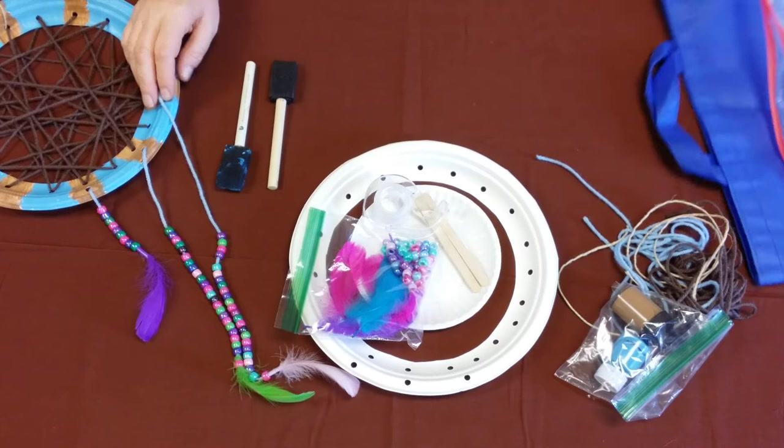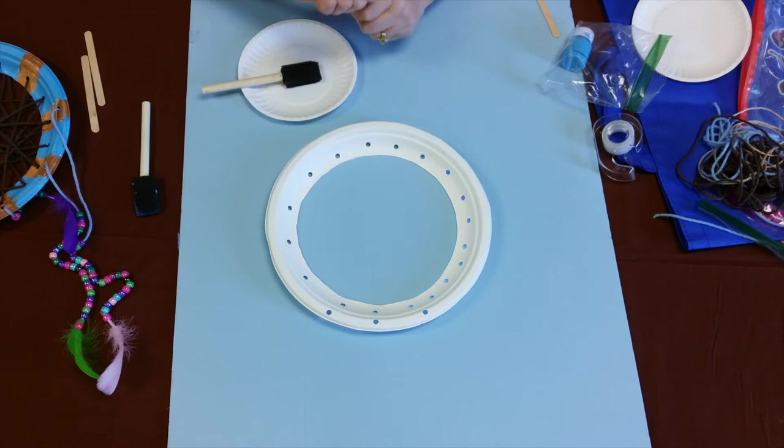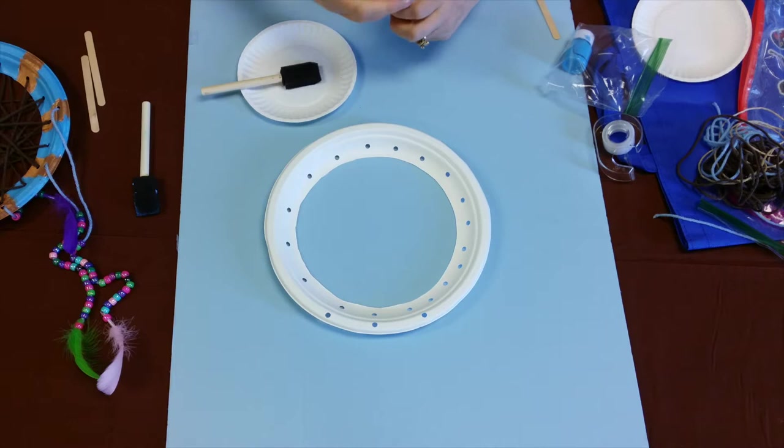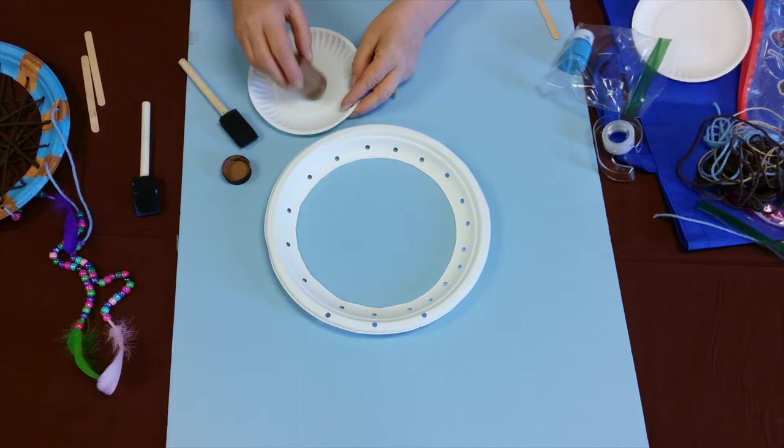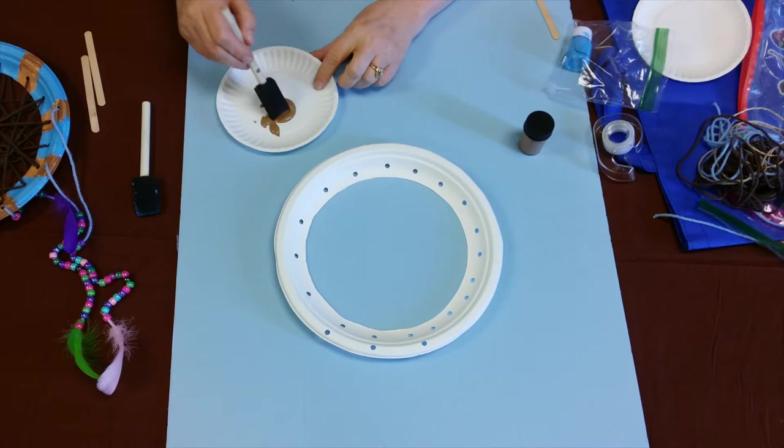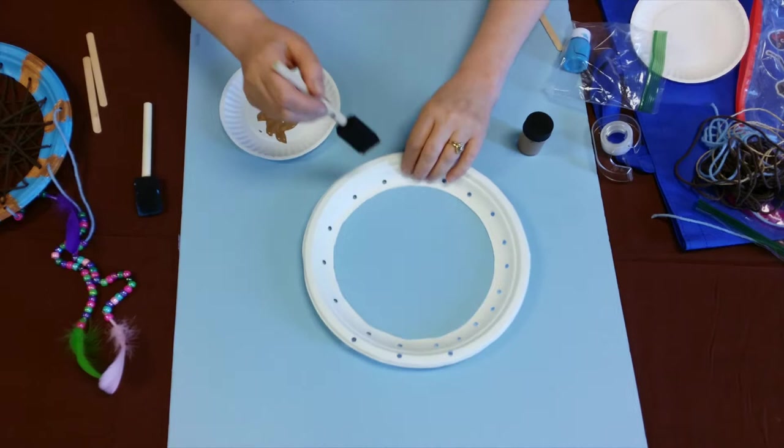Okay kids, so first we're going to paint the base of our dream catcher. The first thing I did is I shook my paint up - yours have got lids on there like little caps so that way it doesn't make a mess. I'm going to take and dump some of the brown paint out, or whatever color you've got. You've got two colors as well. And then get a little bit of paint and start painting.